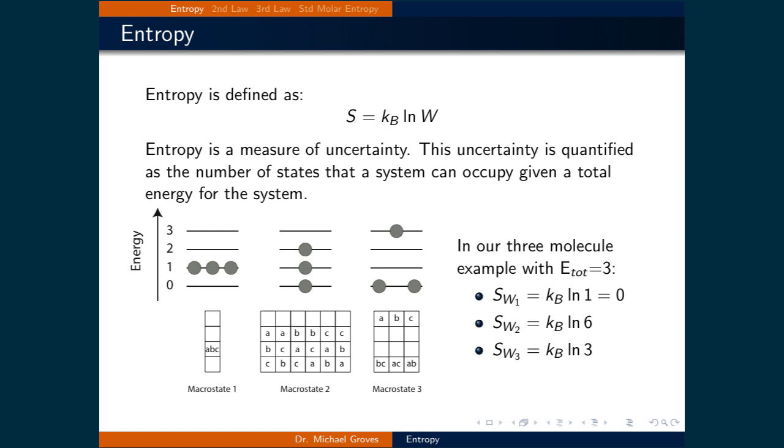One example calculating entropy for a system uses our three-molecule example with a total energy of three. Since there is one microstate for macrostate one, then the entropy for macrostate one is Boltzmann's constant times the natural logarithm of one, which is equal to zero. There are six microstates for macrostate two, so the entropy for macrostate two is kB ln 6. And there were three microstates for macrostate three. Thus, the entropy for macrostate three is kB ln 3.